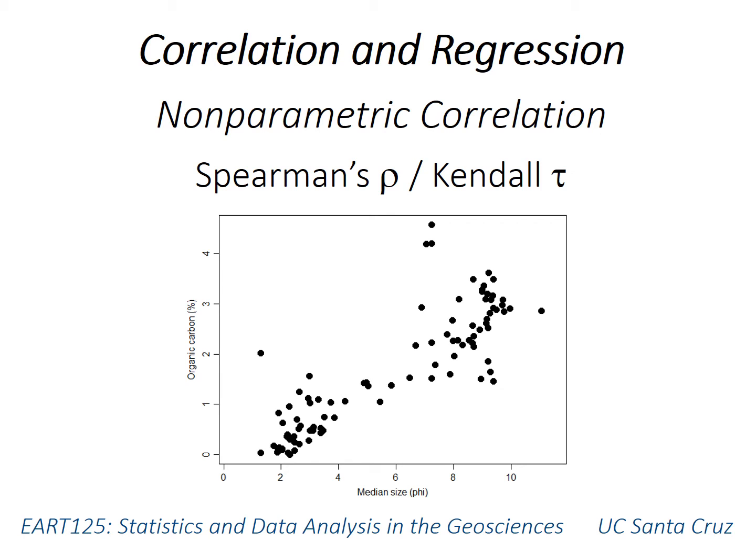This video continues the discussion of methods used for correlation. Correlation is used to determine if there's a relationship between two continuous variables — as one increases in value, does the other also increase, for example. The previous video discussed Pearson's product-moment correlation, and this video introduces two nonparametric methods: Spearman's rho and Kendall's tau.